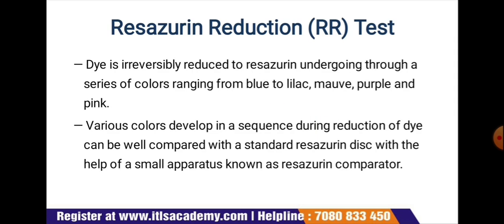In the resazurin reduction test, the dye is irreversibly reduced through a series of color changes from blue to lilac to mauve to purple and finally to pink. The various colors developed during reduction can be compared with a standard resazurin disc using an apparatus known as a resazurin comparator. Advantages of dye reduction tests include being simple, rapid, and inexpensive methods where only viable cell activity produces results. Disadvantages include that not all organisms reduce the dyes equally, and they are not applicable to food organisms that contain reductive enzymes unless special steps are employed.